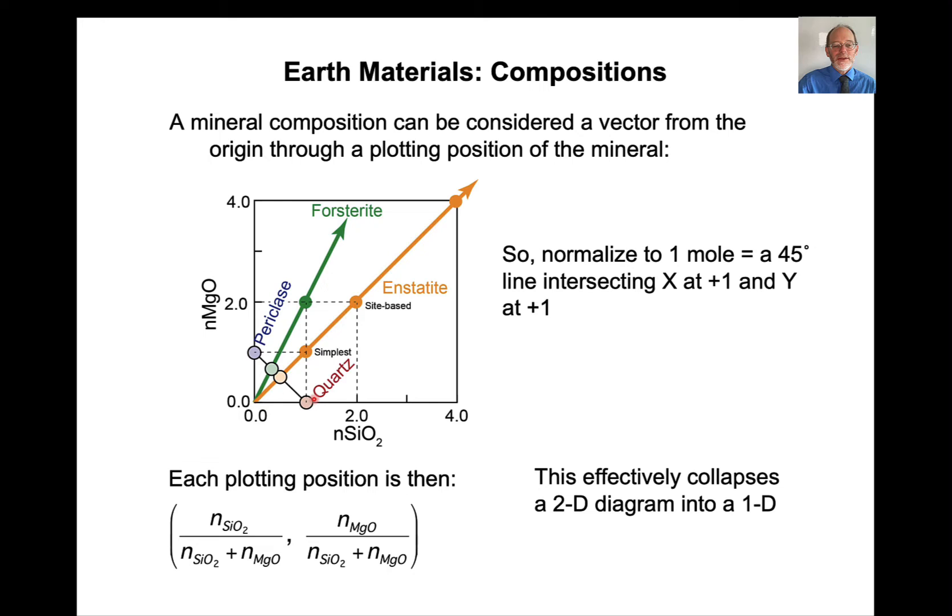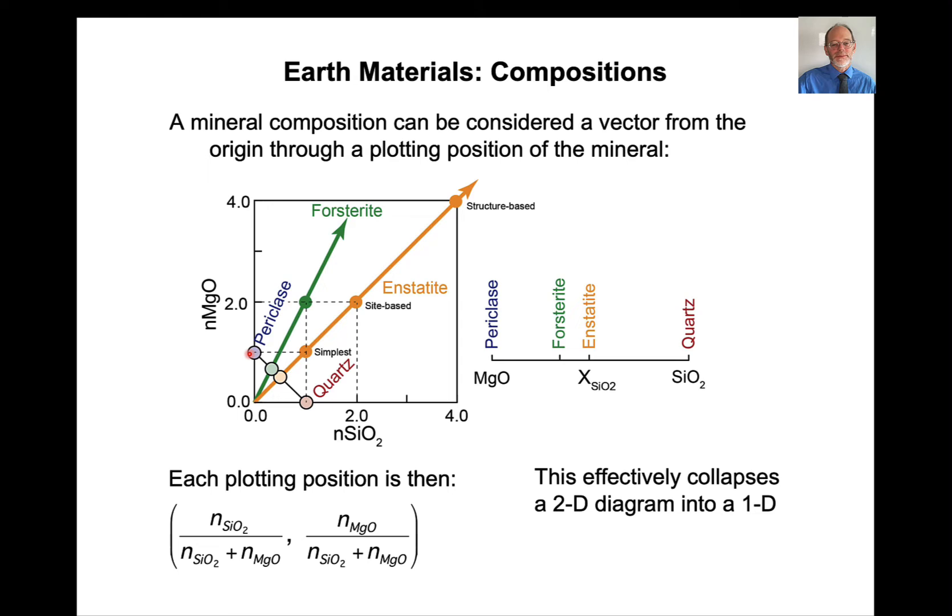This allows us to take a two-dimensional diagram and collapse it to a one-dimensional diagram with pure SiO2 on one end, pure MgO on the other end. And so here is that diagram. Here's periclase, pure MgO. Here's quartz, pure SiO2. Here's enstatite, half SiO2, half MgO. And here's forsterite, has twice as many moles of MgO as SiO2.